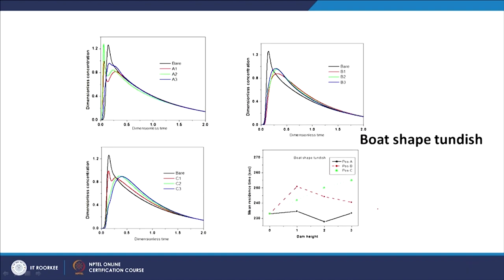For the boat shape, when using the dam at position A — closer to the inlet — you see these RTD curves. Position A is closer to the inlet, the intermediate position is B, and position C is close to the outlet. The numbers 1, 2, 3 reflect the change in dam height. The mean residence time is shown to be maximum for the green curve, which is position C for the boat-shaped tundish.